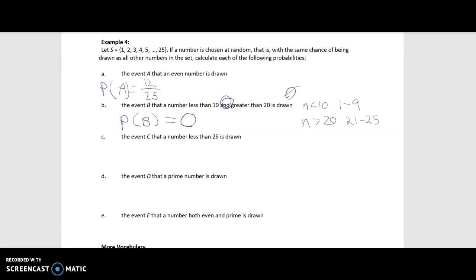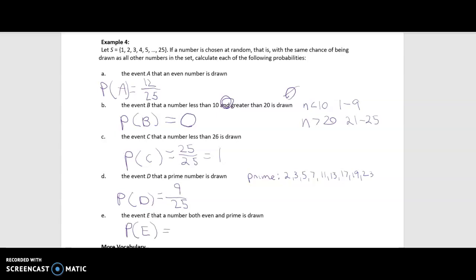Event C is that a number less than 26 is drawn — all numbers from 1 to 25 are less than 26, so P(C) = 25/25 = 1, a certain event. Event D is that a prime number is drawn. The prime numbers in our sample space are 2, 3, 5, 7, 11, 13, 17, 19, and 23 — that's nine primes, so P(D) = 9/25. Finally, the probability that a number is both even and prime: two is the only even prime, so P = 1/25.